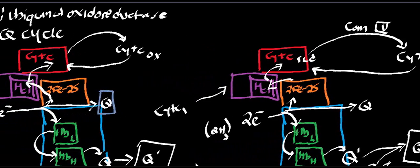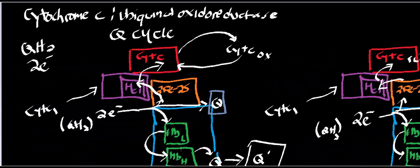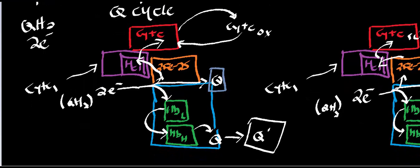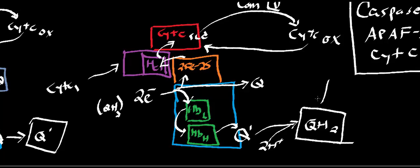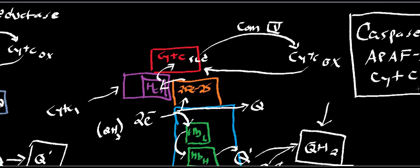So this is the Q cycle, the mechanism of complex three. Ultimately this enzyme does two things: it reduces cytochrome C, and it regenerates a ubiquinol — for every two ubiquinols in, one is regenerated. The reduced cytochrome C then goes into cytochrome C oxidase, and in the next video we'll look at that.